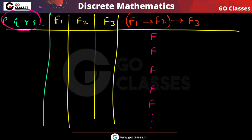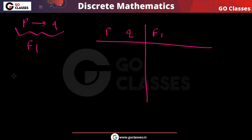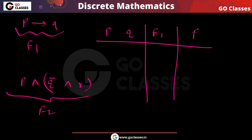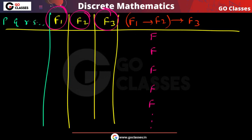If you have 10 propositional variables there will be 2^10 rows, and if you have four propositional variables there will be 2^4 rows. Remember, f1, f2, f3 are propositional formulas over some propositional variables. For example, p implies q is a propositional formula, and p AND q̄ AND r is another. So f1, f2, f3 are propositional formulas over some set of variables.